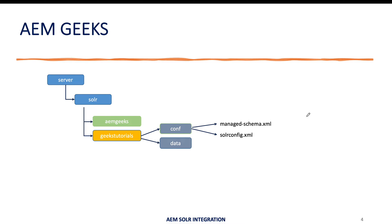There is a structure to it. If you go to the installation directory of Solr, you'll find a folder called server and then solr. Inside this folder you create your cores. Each core can have two mandatory folders: one is conf, another one is data. Data is where your indexed data is stored. The conf folder contains all your configuration, schema, localization, and so on. Two files are mandatory: managed-schema and solrconfig. We have other files as well, but these are mandatory.